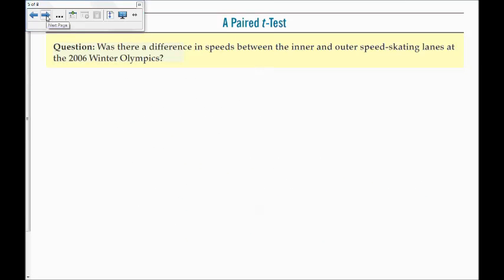So, was there a difference in speeds between the inner and outer speed skating lanes at the 2006 Winter Olympics? There's five steps to a hypothesis test. The first step is to state your null hypothesis, which is the mu of the differences is equal to zero. Was there a difference is the question. So, I'm going to say mu sub d is not equal to zero, and my alpha level I'll use is 0.05.